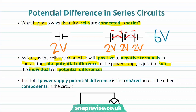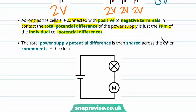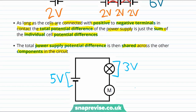We've talked about what happens to cells in series, but what happens once we fix this potential difference and want to know what happens to components connected in series? The total power supply potential difference is then shared across the other components in the circuit. If we had a 5 volt power supply, the drop across the lightbulb and the motor together must equal the whole 5 volts, so the drop across the motor must be 2 volts.